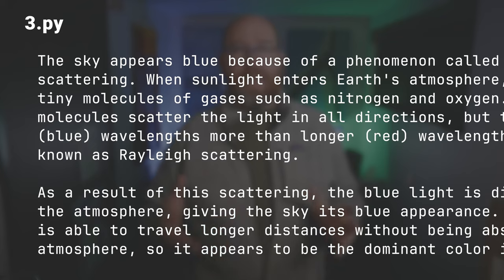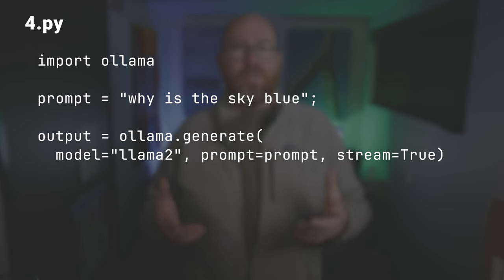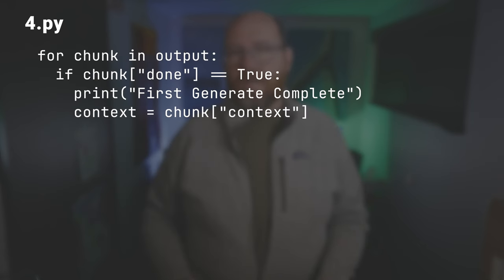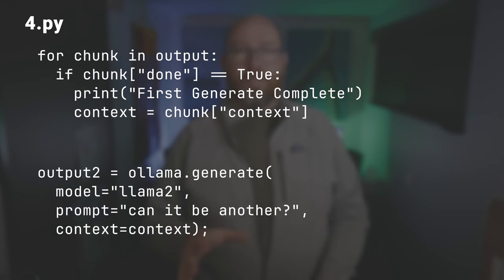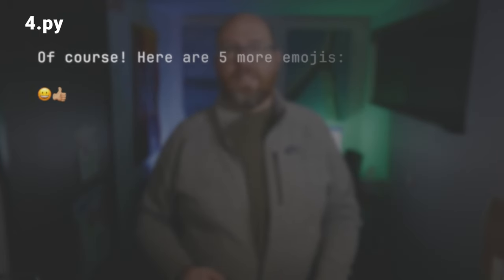We can add the stats at the end by looking for done is true. Durations in Ollama are measured in nanoseconds, so we need to multiply it out to be useful. In 4.py, we're going to make a second generate call that remembers the first — save the value of the context from the last blob and feed it into the context of the second call. I've set the prompt to be vague so we know it was using the context. We can try again without the context set in order to verify that it does what we think.